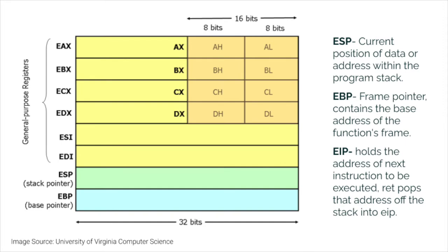We also have our stack pointer and base pointer. EAX to EDX is usually where data is stored. The higher bits are represented by H, and the lower 8 bits by L for each register. The stack pointer, also known as the ESP, is the current position or address within the program stack — whatever is currently being executed. The base pointer, or EBP, is the frame pointer containing the base address of the function's frame. The instruction pointer, EIP, holds the address of the next instruction to be executed.